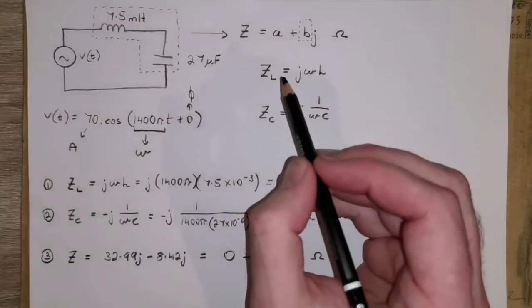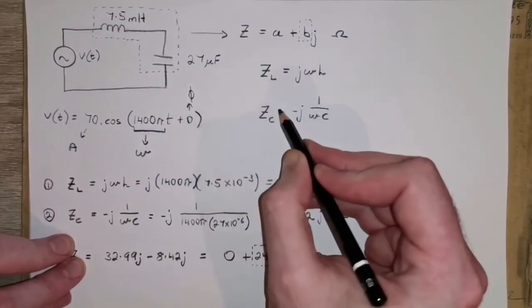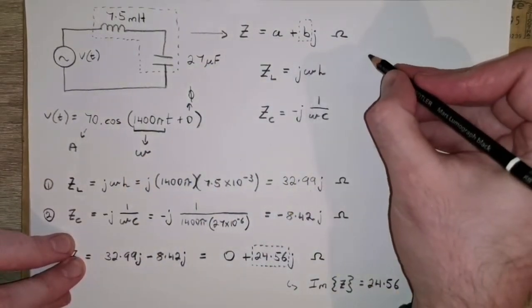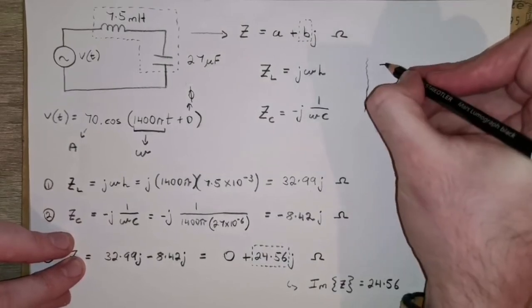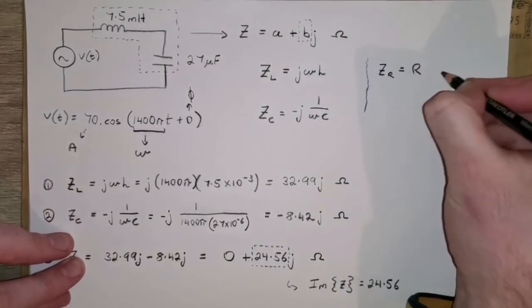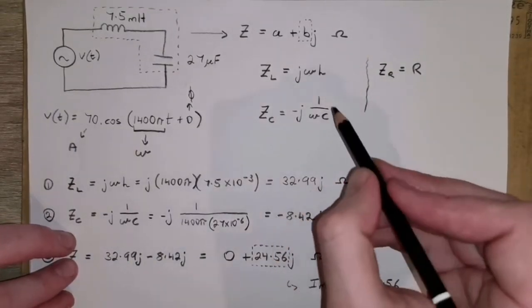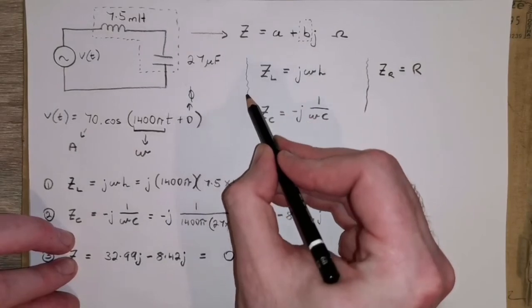So just remember, if we were to do this again, look at the individual elements. And just as an aside, if we did have a resistor, Zr, its impedance is just its resistance. But again, we don't have a need for that in this example.